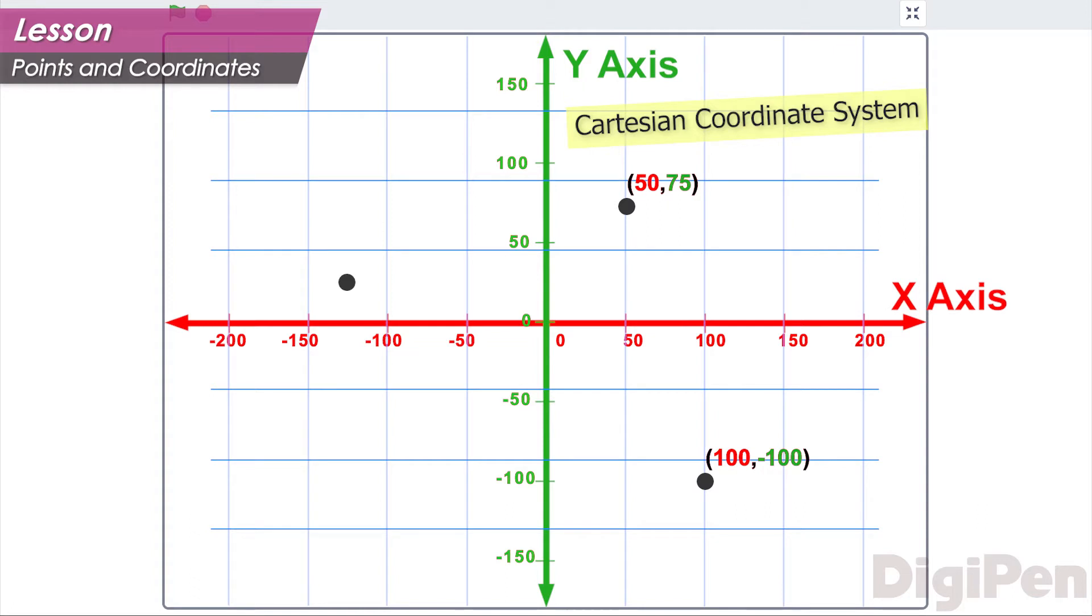This point's coordinates are negative 125, 25, so it's at negative 125, 25.